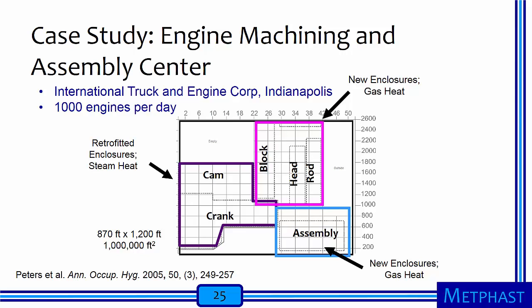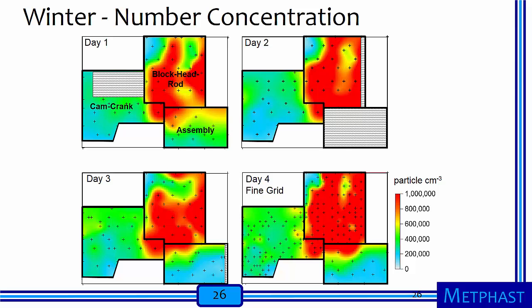I will now show a published case study demonstrating the importance of using different instruments to assess airborne exposures. Hazard mapping was performed at an engine machining and assembly center of International Truck and Engine Corporation in Indianapolis, Indiana. This facility consisted of roughly 1 million square feet — equivalent to 30 football fields — under a single roof. The facility had poorly fitting retrofitted enclosures and steam heat in a cam crank production area, while new enclosures with gas heat were used in a blockhead rod line and an assembly area. In winter, we measured particle number concentrations with a condensation particle counter throughout the facility on four consecutive days.